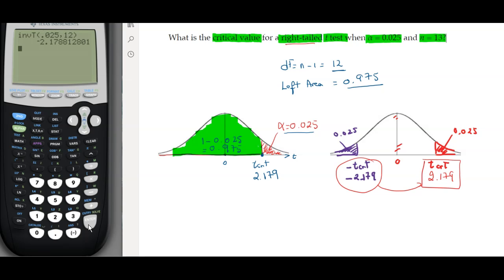It's up to you which method you want to use. You can use 1 minus alpha to get the left area, or you can use the symmetry as well.